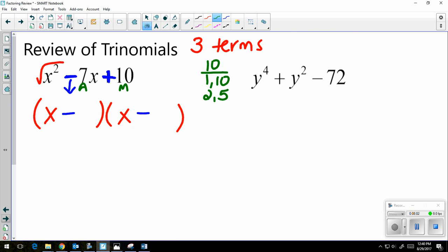So 1 and 10, if I combine them, adding or subtracting, will not give me 7. 2 and 5 is going to work. Bigger number always comes first. So my bigger number is going to go there and my smaller number goes there. That's because you're using the sign trick and we've already determined the positives and the negatives. So in factored form, I have x minus 5 times x minus 2.